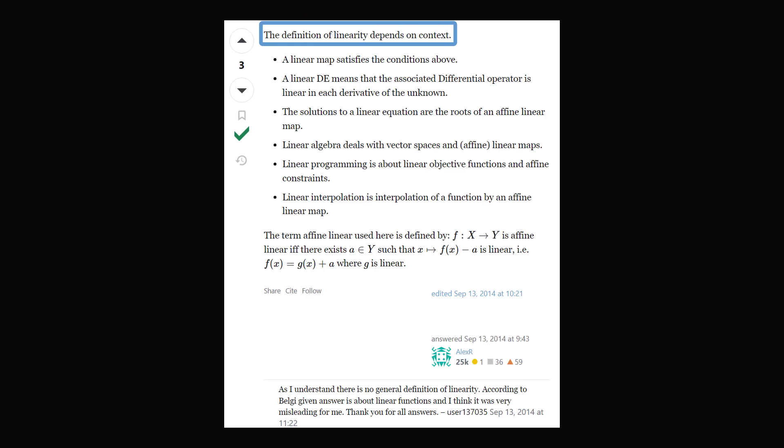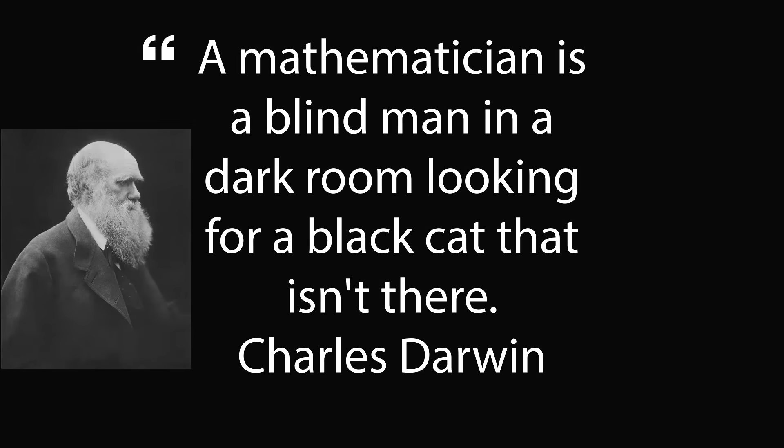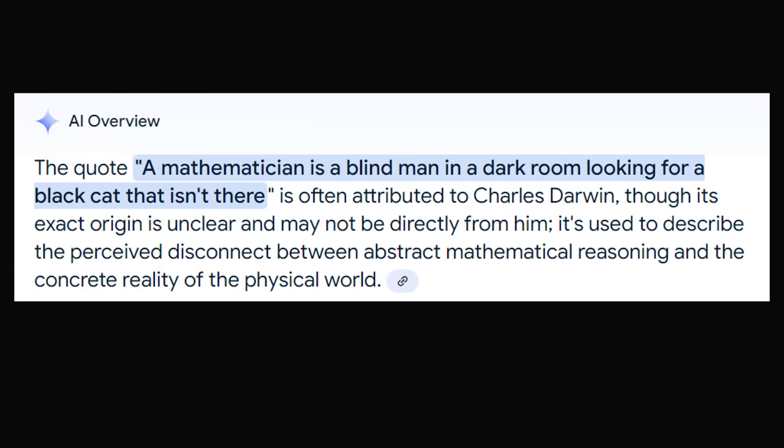I am reminded of a famous quote that is attributed to Charles Darwin. A mathematician is a blind man in a dark room looking for a black cat that isn't there. What does this even mean? Google Gemini summarizes it as a quote that's attributed to Charles Darwin, though its exact origin is unclear and may not even be directly from him. But the quote is used to describe the perceived disconnect between abstract mathematical reasoning and the concrete reality of the physical world.